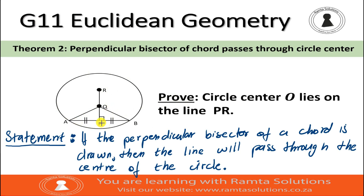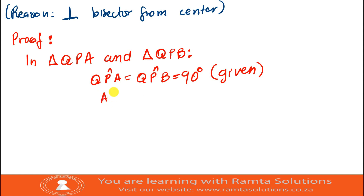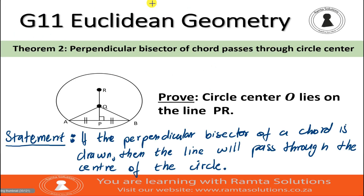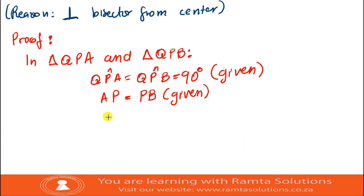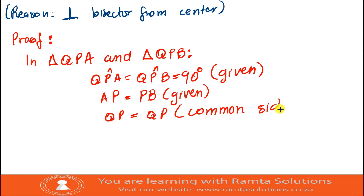AP is also equal to PB — this is given. Both triangle QPA and triangle QPB have side QP, so QP equals QP. The reason is that it is a common side, common to both triangles.